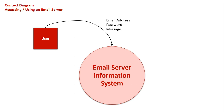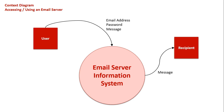If they're writing a message, it's obviously intended to go to a recipient, so a flow line out of the Email Server Information System would go to a recipient, who would be receiving that message. We could go deeper — the recipient could reply and so on — but for now we'll keep it focused on this single email server.